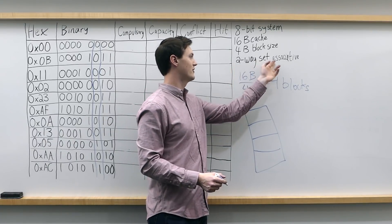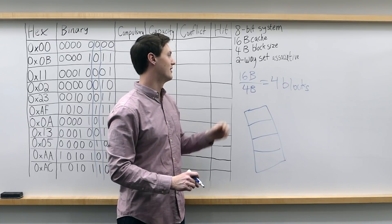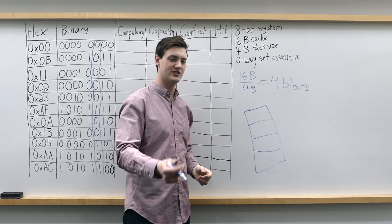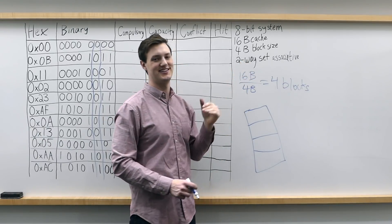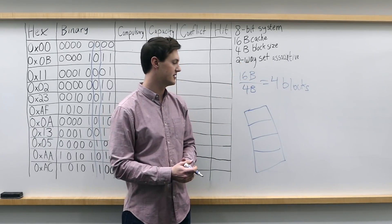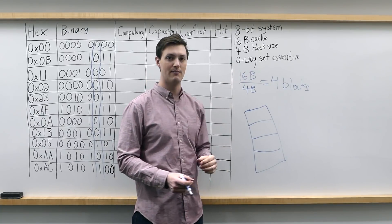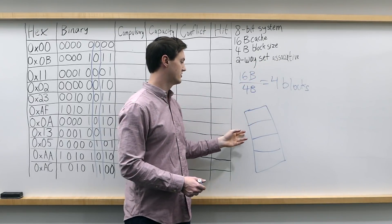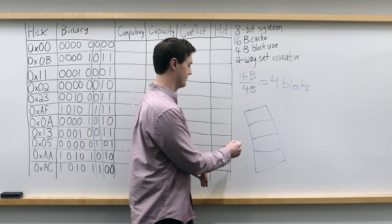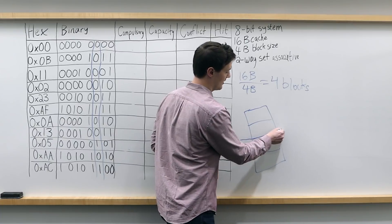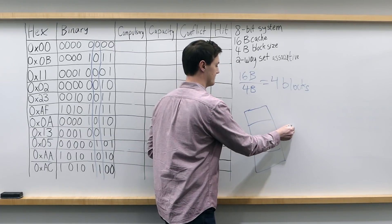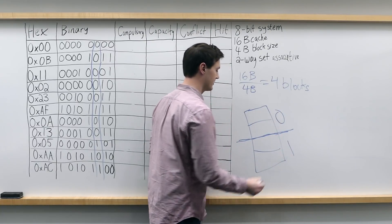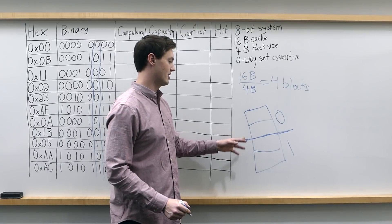Next we see that we have 2-way set associative. Remember the distinction between way and number of sets — the number of ways does not necessarily equal the number of sets. The number of ways is how many blocks you have within one set. So with a 2-way set associative cache, we have 2 blocks in each set. We could draw another line here to represent our two sets, so we would have set 0 here and then set 1 here. So this would be the breakdown of our final cache.